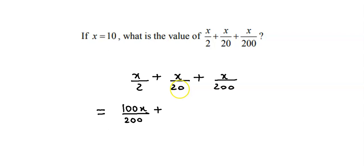Now 20 into 10 is 200 so we multiply numerator and denominator by 10. So this becomes 10x upon 200 plus x upon 200. Now we have a common denominator that is 200 and in the numerator we have 100x plus 10x plus x.